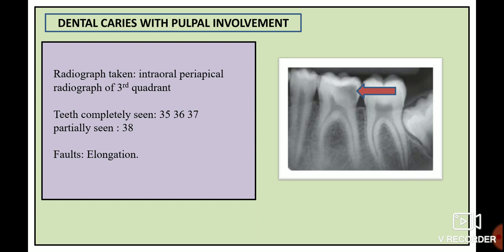Generally, the mandibular molar has two roots — mesial and distal root. Here it has an intact lamina dura and no significant changes detected in the periapical region. These radiographic features are suggestive of dental caries with pulpal involvement.